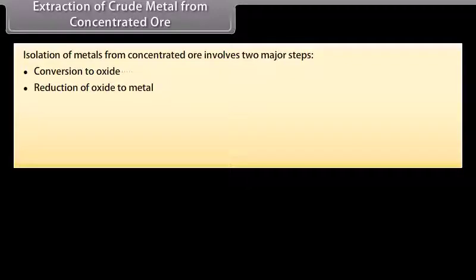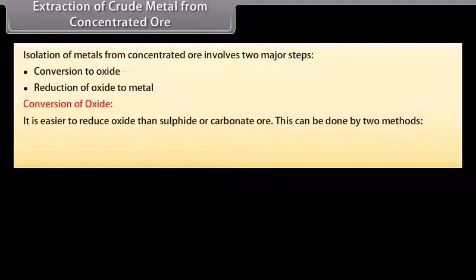Extraction of crude metal from concentrated ore. The concentrated ore must be converted into a form which is suitable for reduction. Oxides are easier to reduce. Thus, isolation of metals from concentrated ore involves two major steps: conversion to oxide and reduction of oxide to metal.